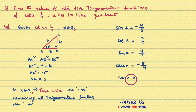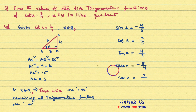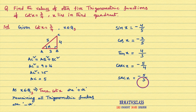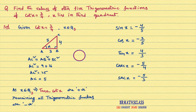Secant x is defined as hypotenuse divided by adjacent side. Hypotenuse is 5 divided by adjacent side 3. As X lies in third quadrant, secant x is negative. Therefore, secant x equals minus 5 by 3. We have now calculated all other five trigonometric functions when one trigonometric function is given and the quadrant is specified.